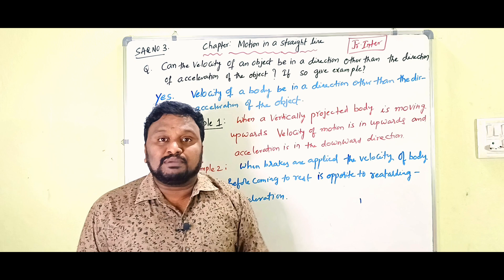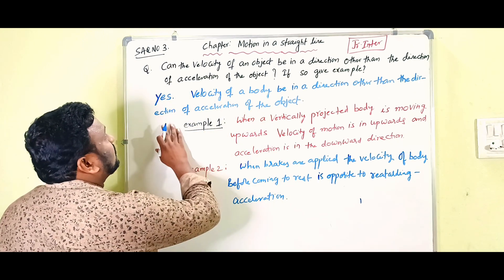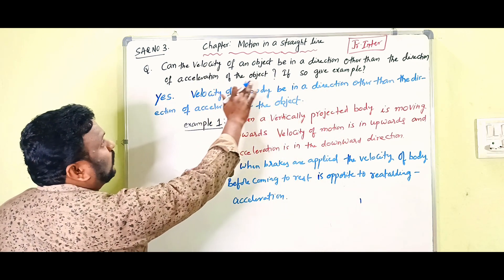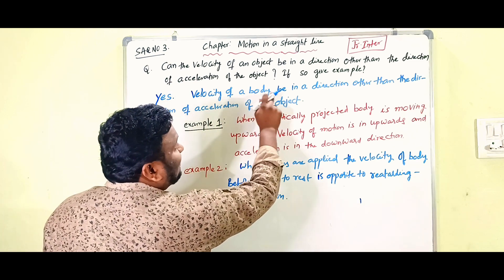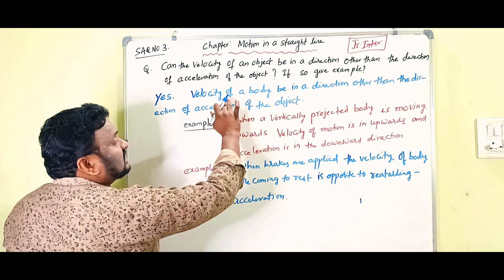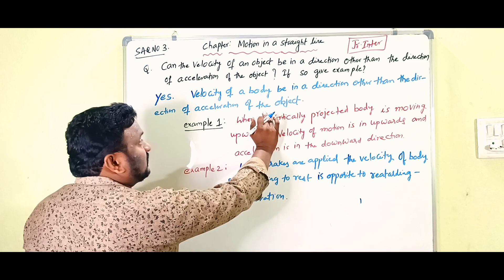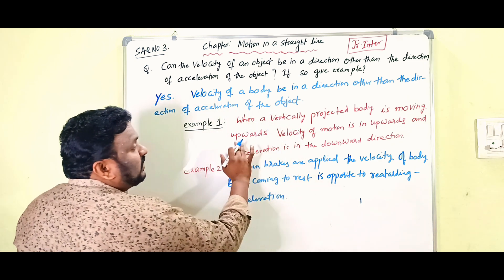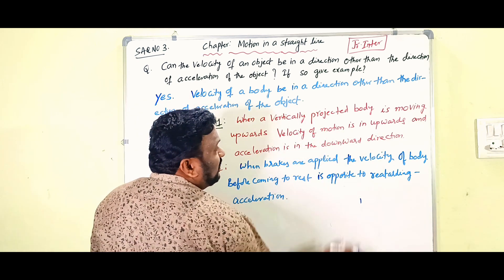So the answer is: Yes, the velocity of an object can be in a direction other than the direction of acceleration. Example one: when a vertically projected body is moving upwards, the velocity of motion is in the upward direction and the acceleration is in the downward direction.